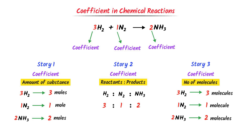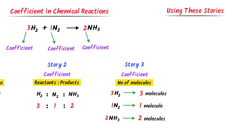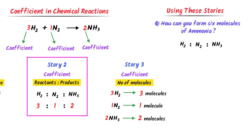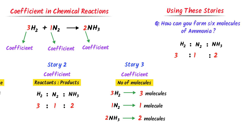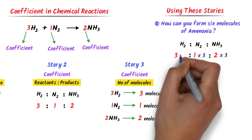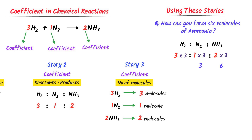How can we use these stories to calculate the amount of reactants and products? Consider this question: how can you form 6 molecules of NH₃? According to story 2, the ratio of H₂ to N₂ to NH₃ is 3:1:2. We need 6 molecules of NH₃, so I multiply the NH₃ ratio by 3, and also multiply N₂ and H₂ by 3. So 2×3=6, 1×3=3, and 3×3=9. This reveals that we need 9 molecules of hydrogen gas to react with 3 molecules of nitrogen gas to form 6 molecules of NH₃.